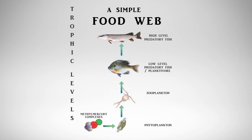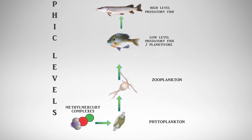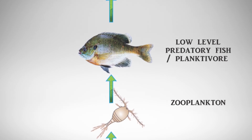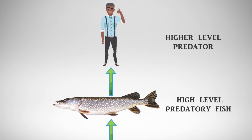So you know about the food web. If we look at the bottom, this is where the mercury begins its aquatic bioaccumulation process into microorganisms, then into fishes, and then into us.